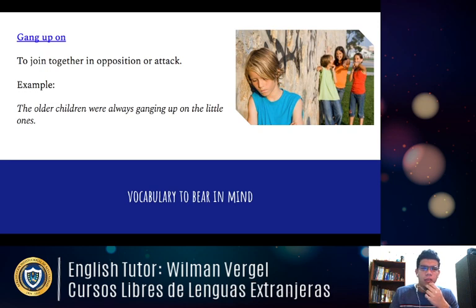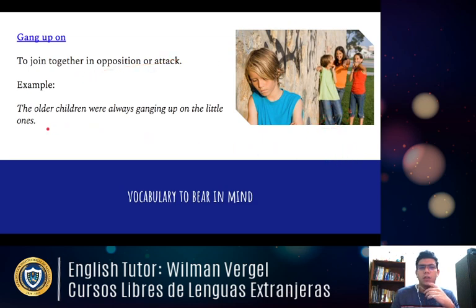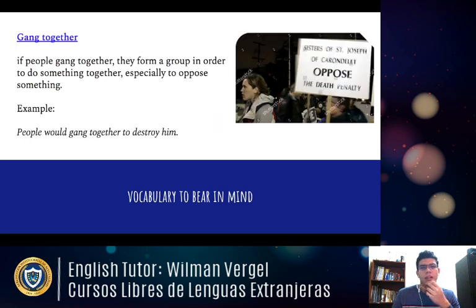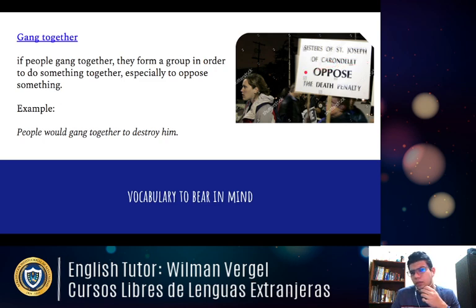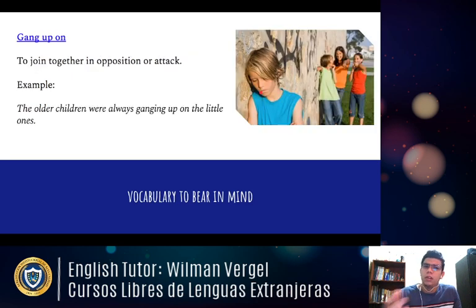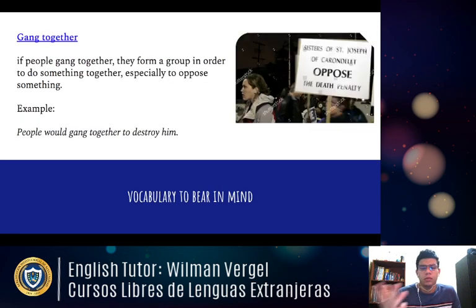The next phrasal verb is 'to gang up on,' meaning to join together in opposition or attack. For example: 'The older children were always ganging up on the little ones' — which is like bullying. There's also 'gang together' — if people gang together, they form a group to do something, especially to oppose something. Example: 'People will gang together to destroy them.' Or like a protester opposing the death penalty — you're ganging together to oppose a topic.